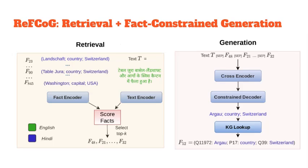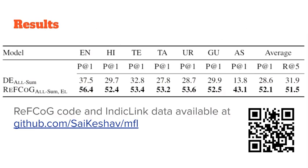We present the RefCoK model, which combines retrieval and constraint generation to predict the facts that are present in a sentence. We find that the model achieves scores in the early 50s. This shows the challenging nature of the task and significant scope for future improvement. Thank you.